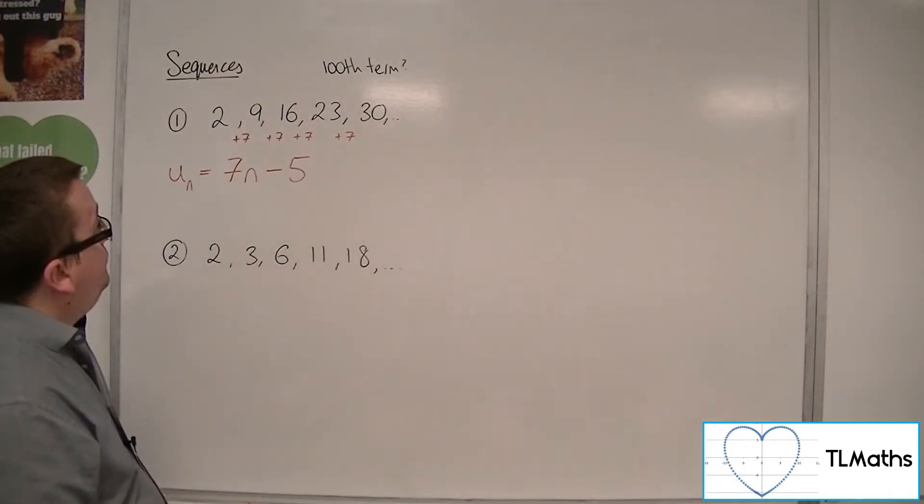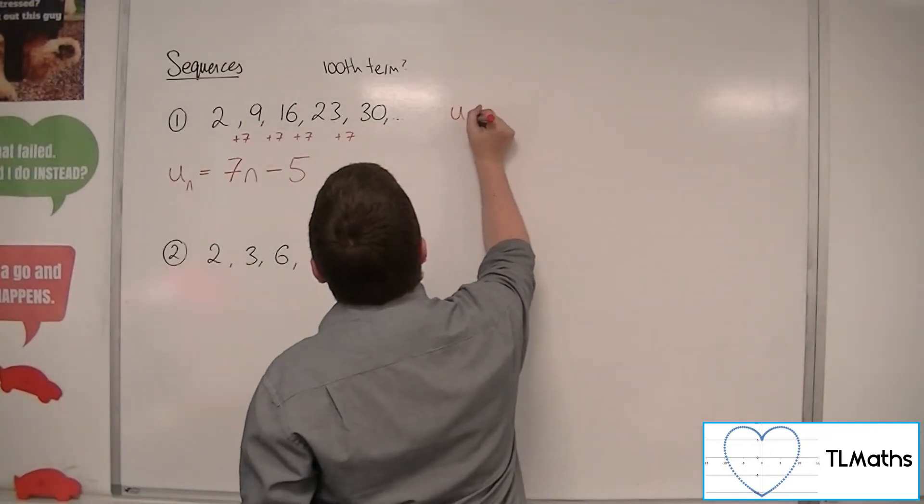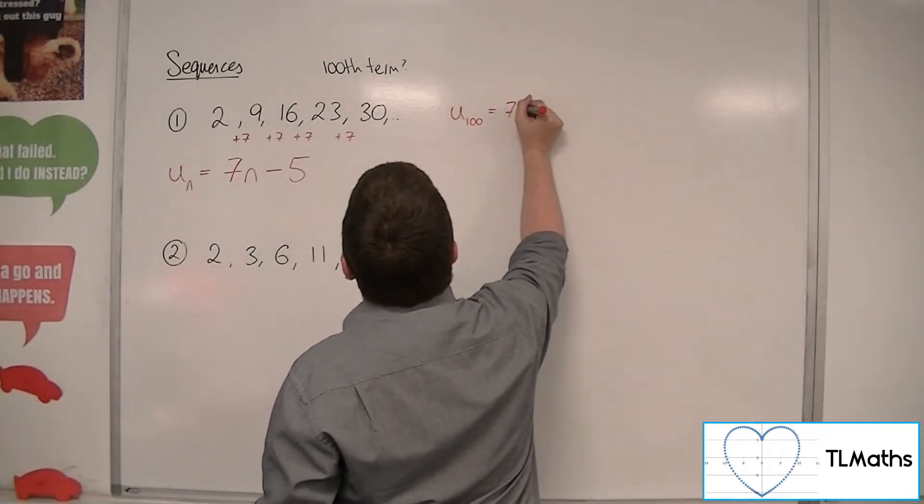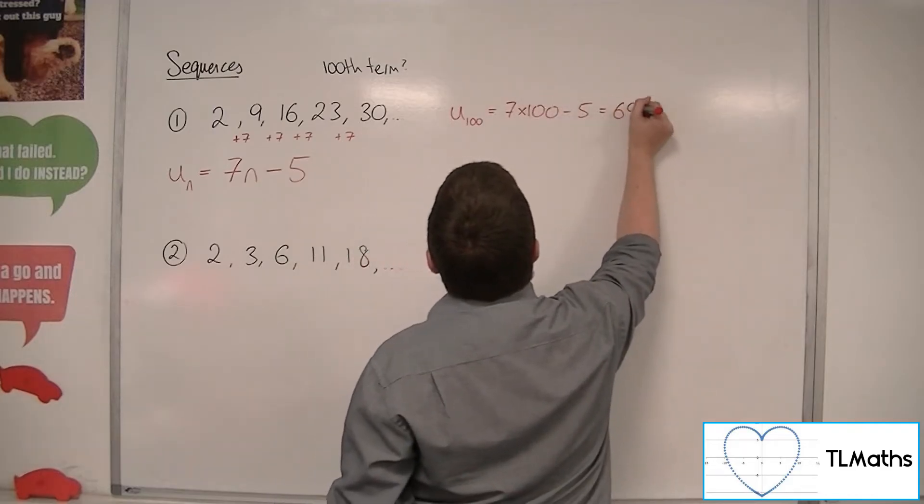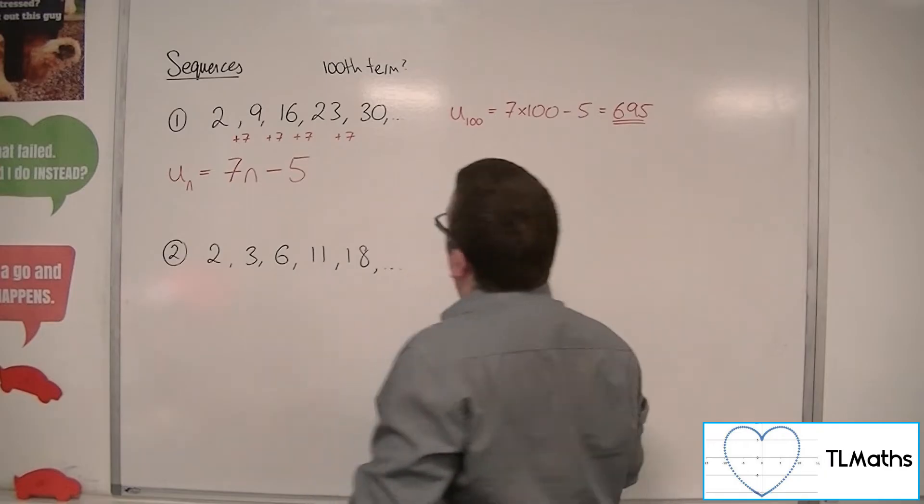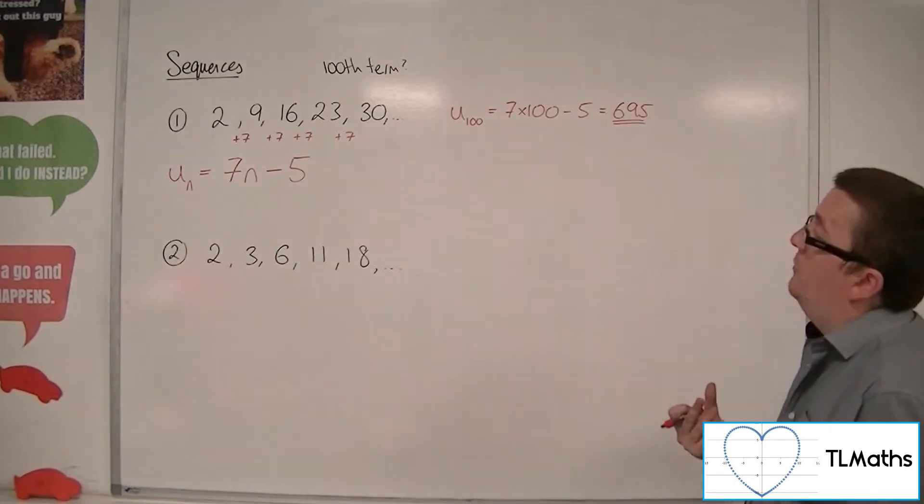So the hundredth term would be u100, which would be 7 lots of 100, take away 5. So 695. And that's how you can work out the hundredth term for number 1.